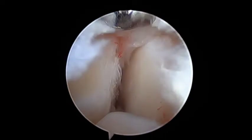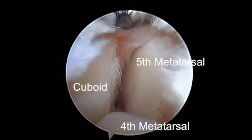Advancing laterally, you can see the 5th tarsometatarsal joint. You can also visualize the junction between the cuboid and the 4th and 5th metatarsal articulation.